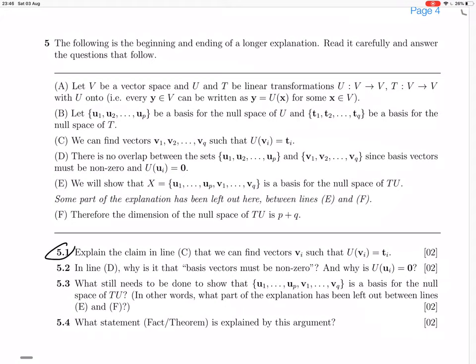5.1. Explain the claim in line C that we can find vectors vi such that U(vi) equals ti. So C says we can find vectors vi such that U(vi) equals ti. So explain, they want to say how we can do that.